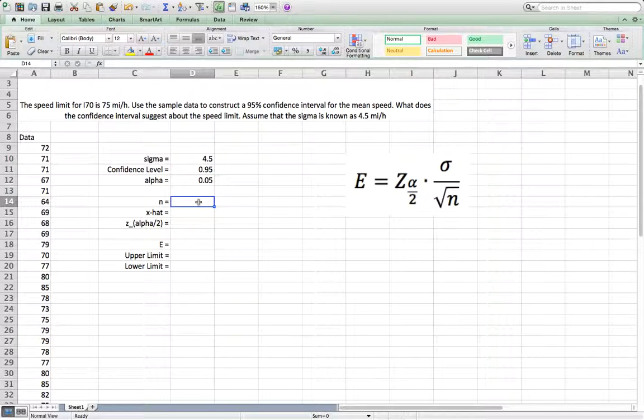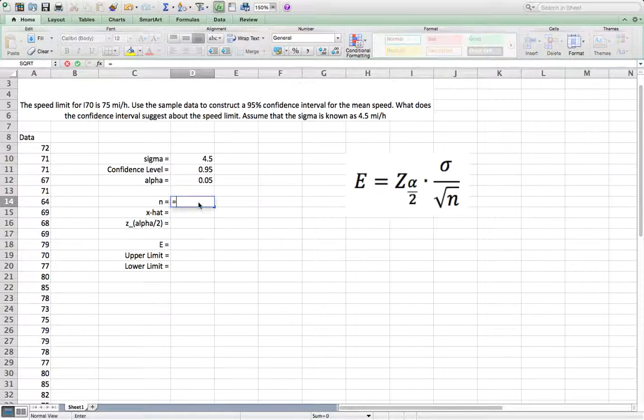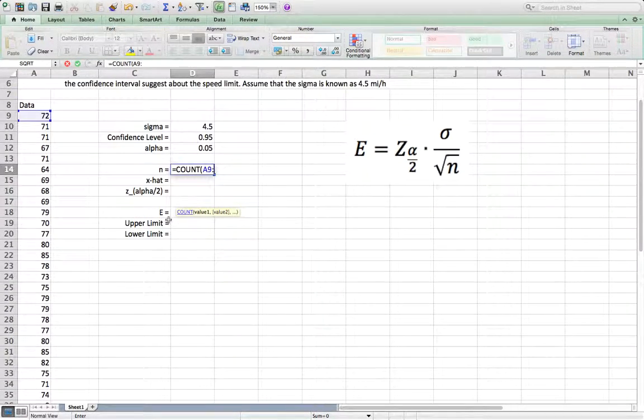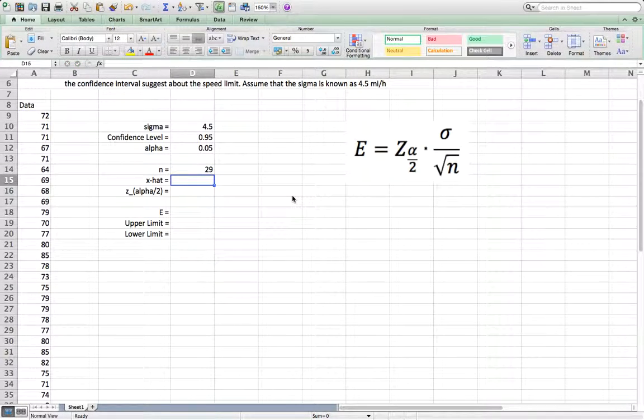Then n is the sample size. We can use count, count the data from A9 to, if you go down, A37. So A9 to A37, you totally have 29 sample data.